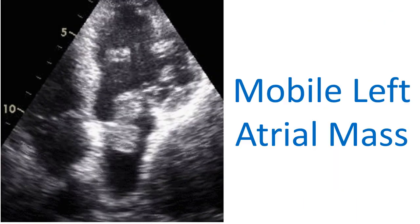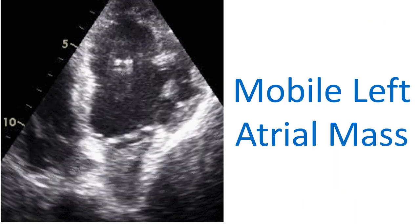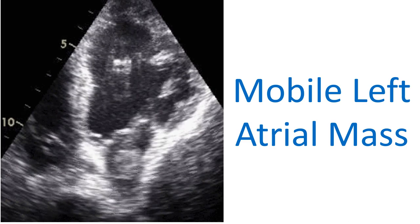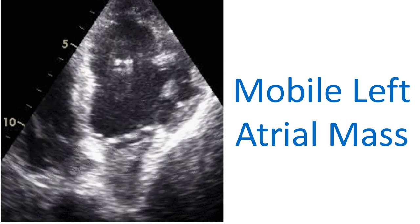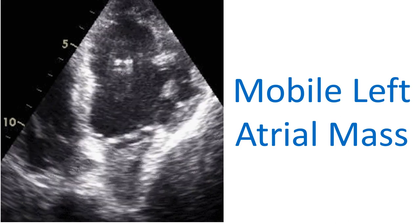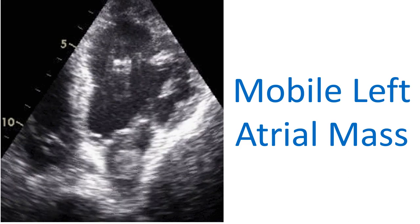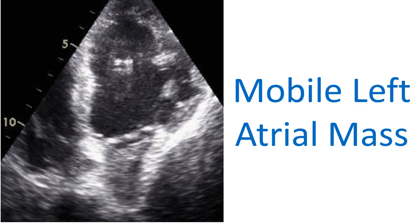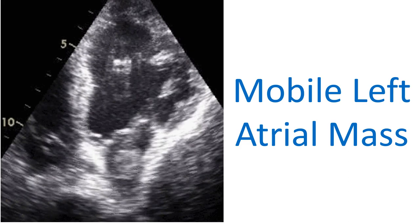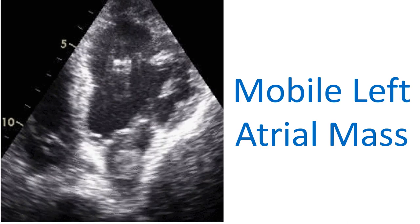This animated image shows a mass in the left atrium prolapsing into the left ventricle in diastole, as is usual with left atrial myxoma. The mass produces left ventricular inflow obstruction as it is across the mitral opening in diastole, almost filling the orifice. In systole, it goes back into the left atrium.